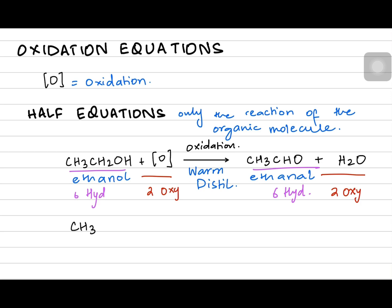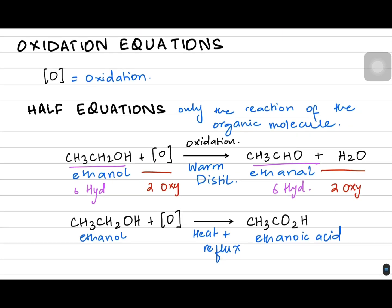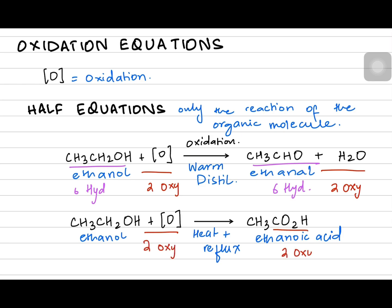Now let's talk about complete oxidation. CH₃CH₂OH goes through a reflux setup, and in reflux we make acid, not aldehyde. So CH₃CH₂CO₂H — carboxylic acid — is the product; ethanol is making ethanoic acid. We write [O] to show oxidation. Counting oxygen: two on the left-hand side and two on the right-hand side, so it appears balanced.